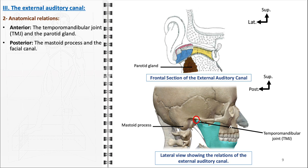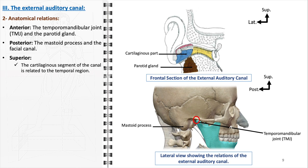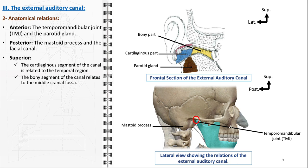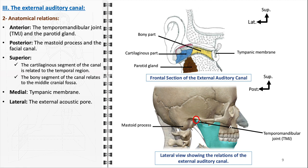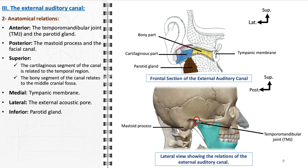Superiorly, the canal exhibits two different relationships depending on its segment. The cartilaginous segment is related to the temporal region of the skull, while the bony segment is situated beneath the middle cranial fossa, which houses essential brain structures. Medially, the canal terminates at the tympanic membrane, a critical boundary separating the external ear from the middle ear, through which sound vibrations pass to the ossicles of the middle ear. Laterally, the canal opens to the external environment at the external acoustic pore. Inferiorly, the canal is in proximity to the parotid gland, illustrating the gland's extensive spread around this region.